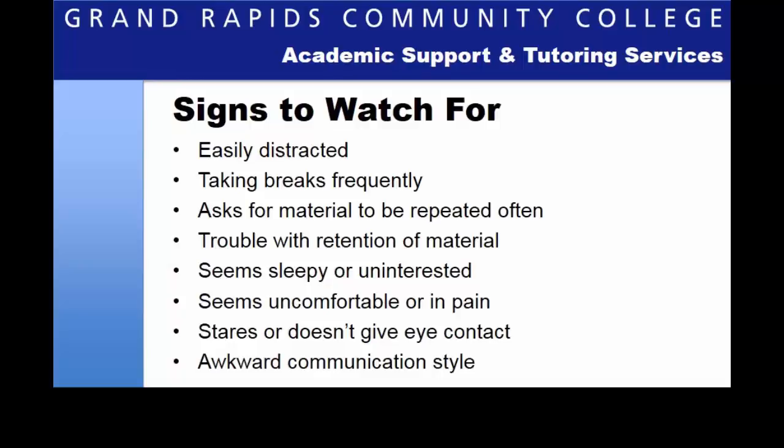Tutors need to also be looking for less obvious signs that the student may learn differently or need different techniques for tutoring. For instance, if you are working with a student who seems easily distracted and has to take frequent breaks, this may be a student with ADD or attention deficit disorder. If a student asks for material to be repeated often, they may have a hearing issue or struggle with difficult concepts because of a cognitive issue or learning disability. If a student seems sleepy, uninterested, uncomfortable, or in pain, they may have a chronic health issue or might be taking a medication affecting their learning. Sometimes you might notice a student who seems socially awkward or does not maintain eye contact — this might be a student with a traumatic brain injury or an autism spectrum disorder. The diagnosis is not the focus for you to know, and questioning the student is also inappropriate — in fact, it violates federal privacy regulations. Paying attention to the nuances allows the tutor to adapt the way they are working in order to improve effective communication, and this is true for any student you are working with.